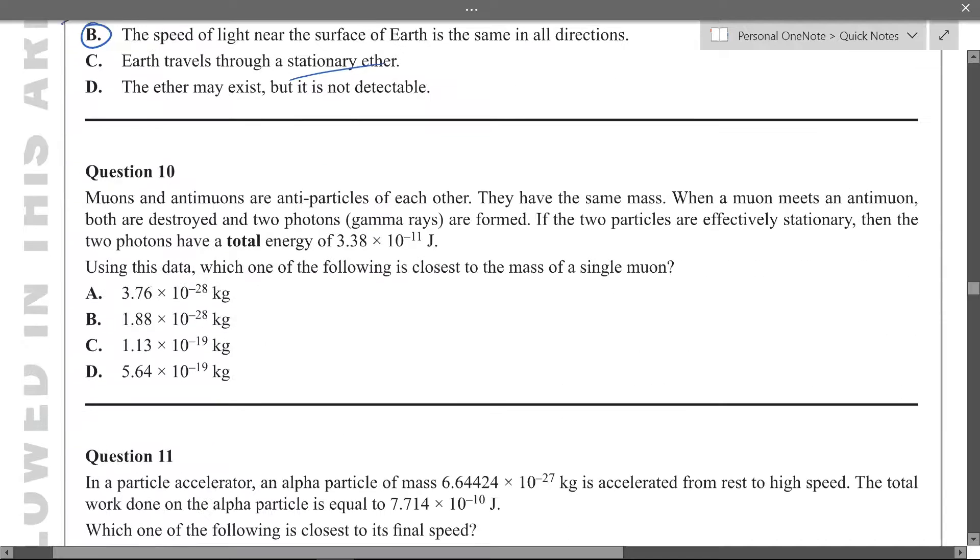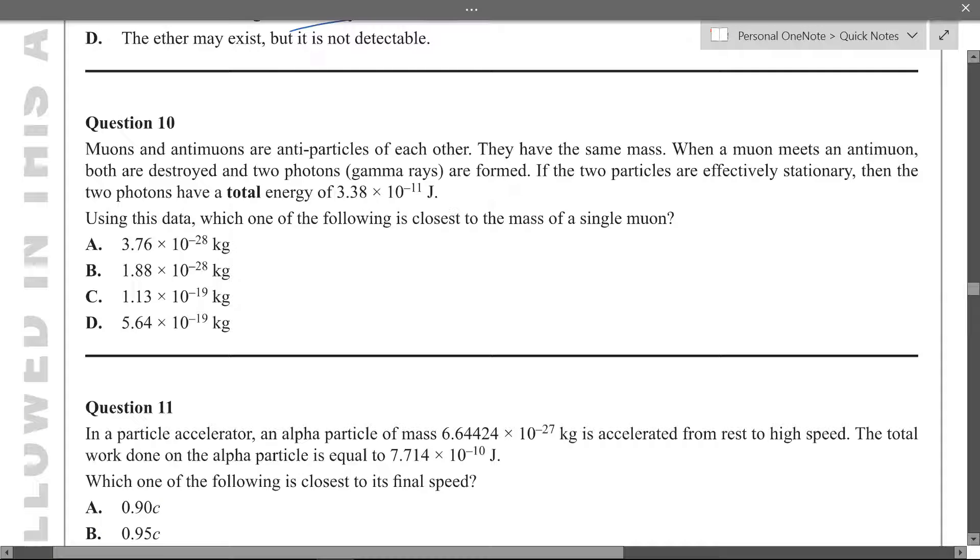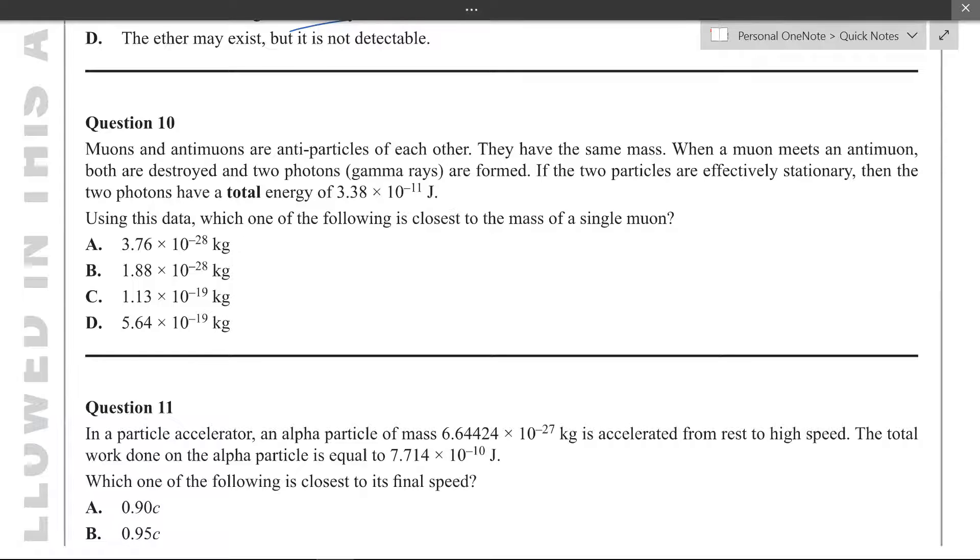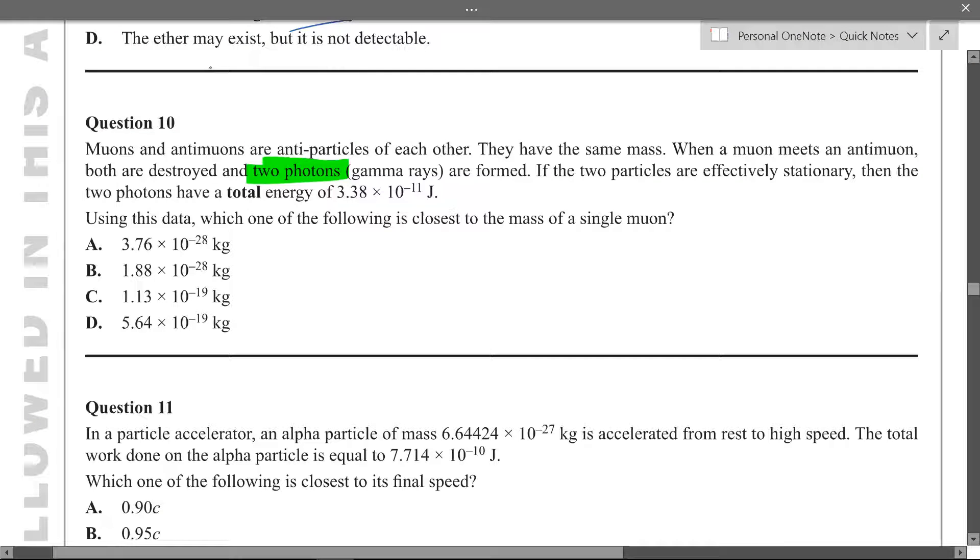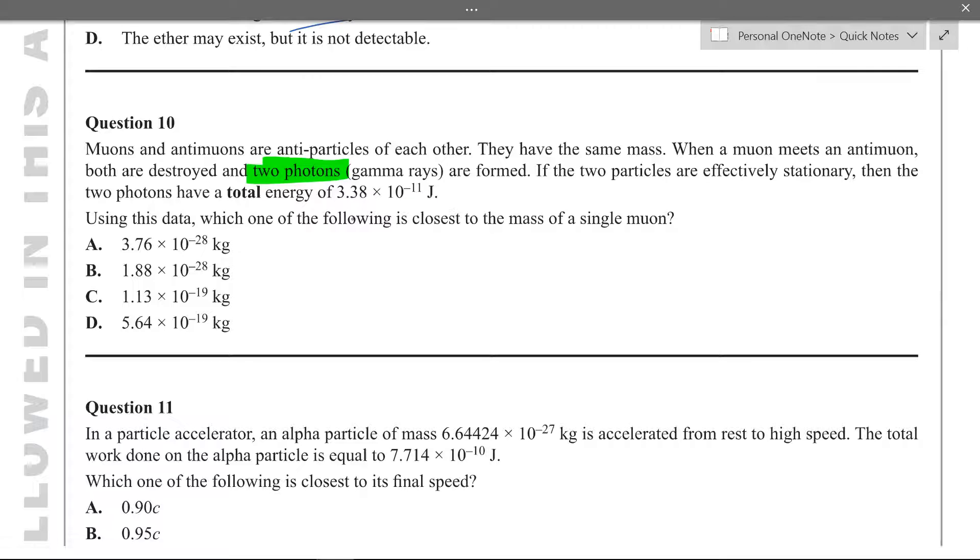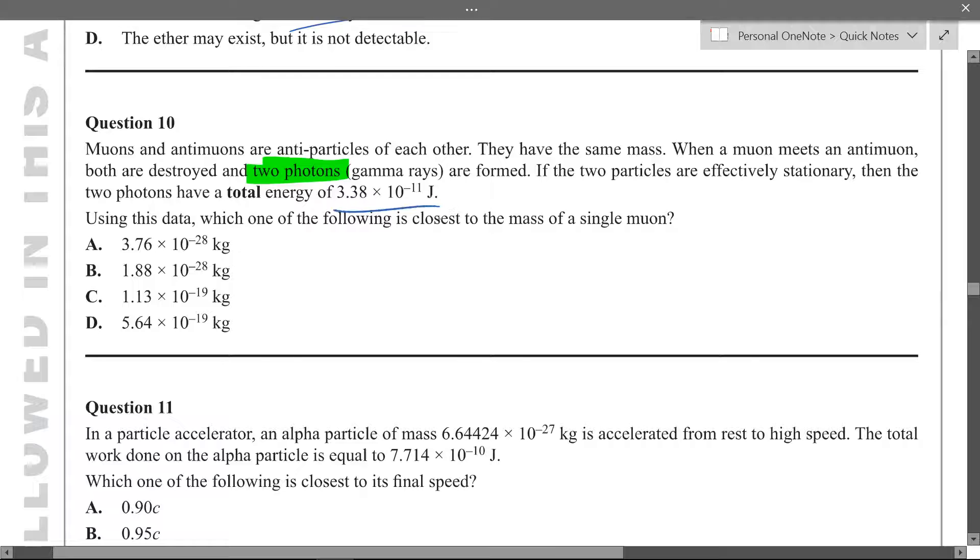So muons and anti-muons are antiparticles, they have the same mass. When they meet they destroy each other and two, that's important, two of these are formed. If two particles are effectively stationary then the photons have a total energy of this, so what's the closest mass to a single muon? So if two photons are 3.8, so muon and anti-muon meet and then they make two photons. So that means one photon is the energy released by one muon. So we divide this by two, we get 1.69 times 10 to the negative 11 and then you can equate that to mc squared and then m is, you just get b.